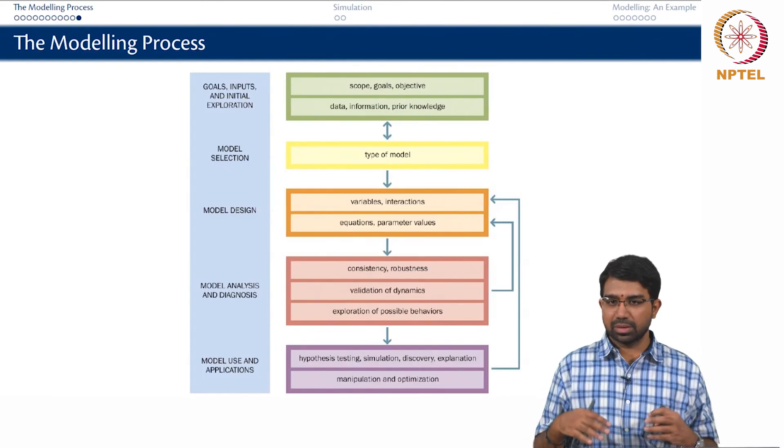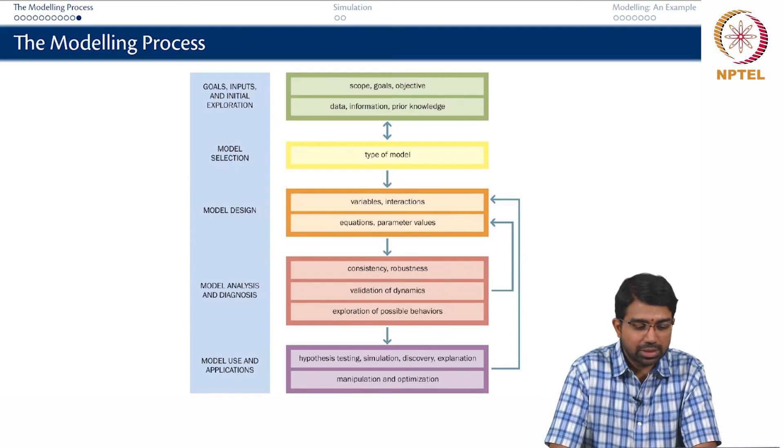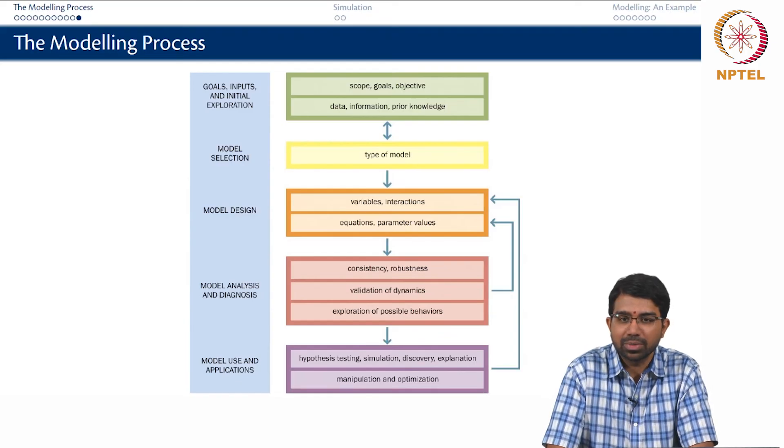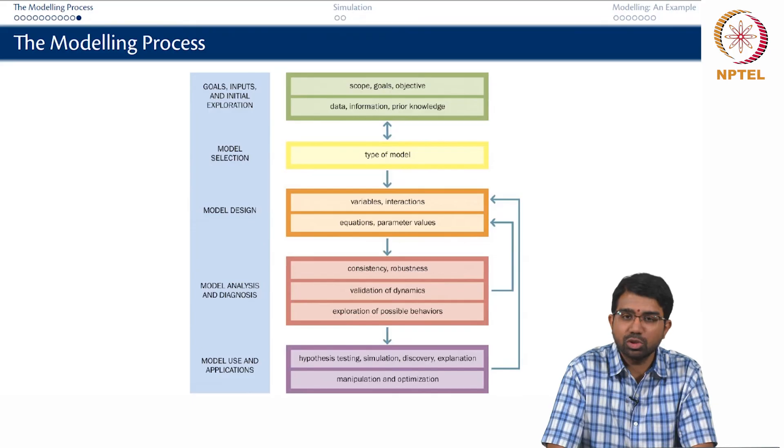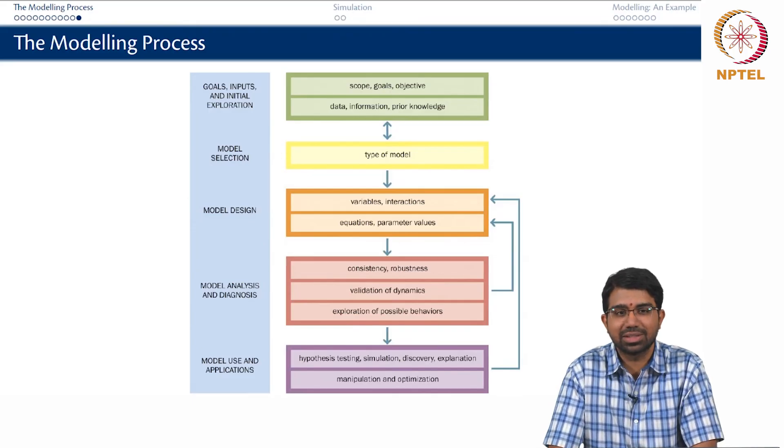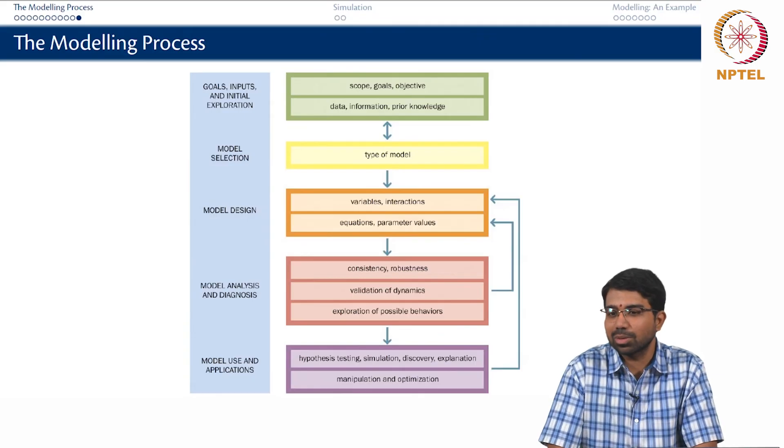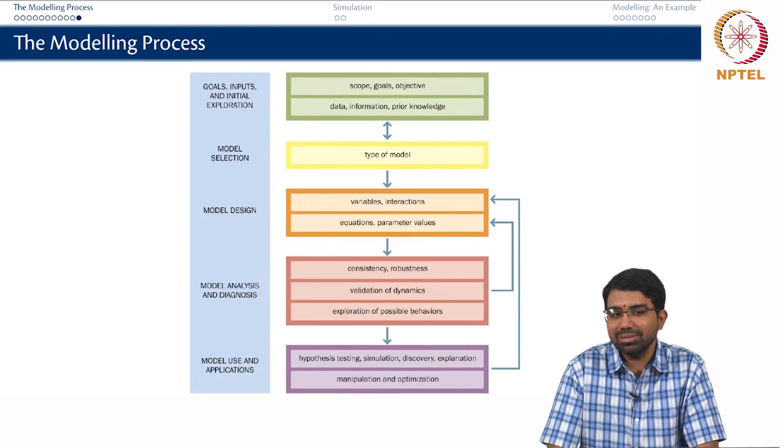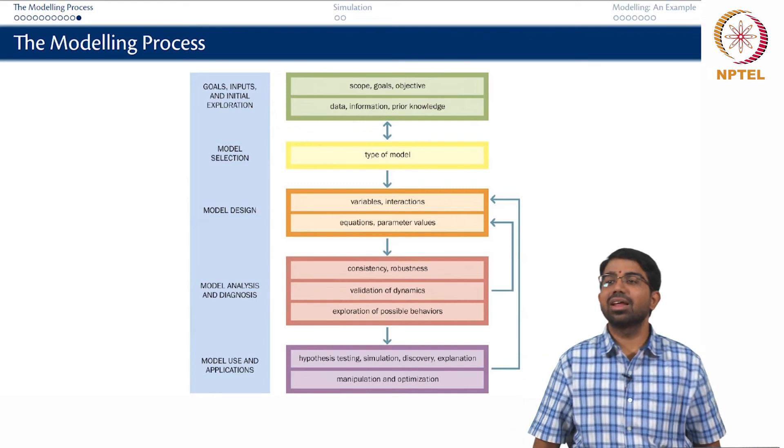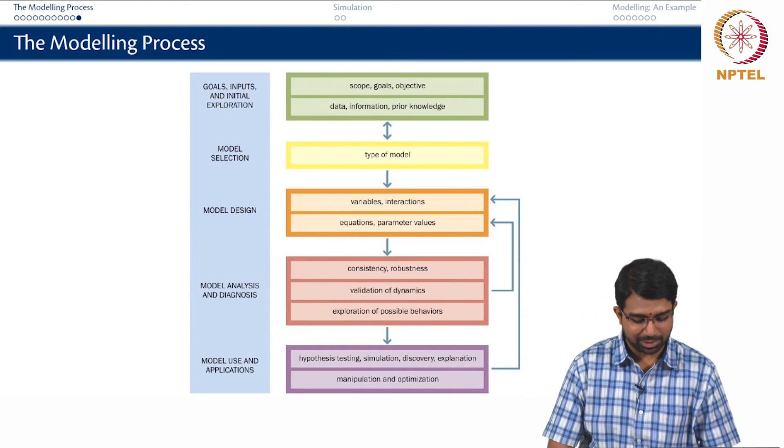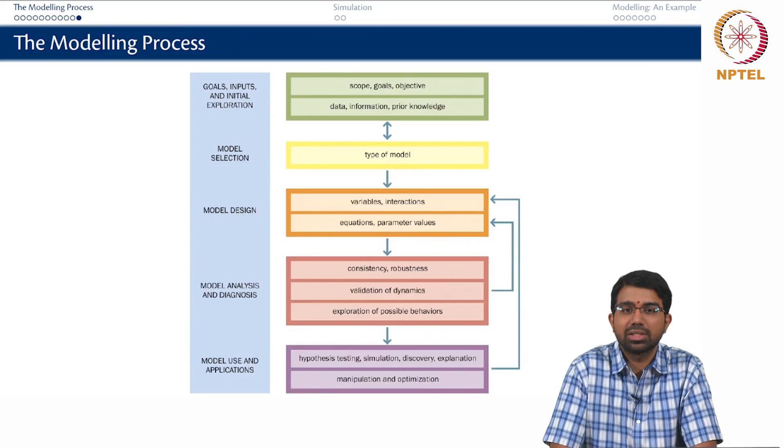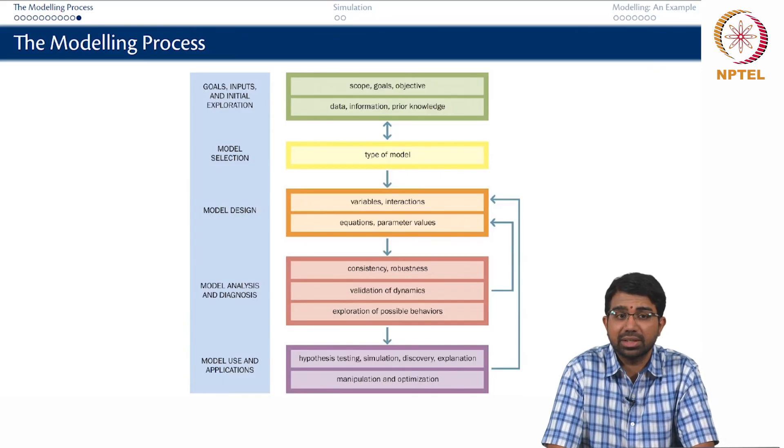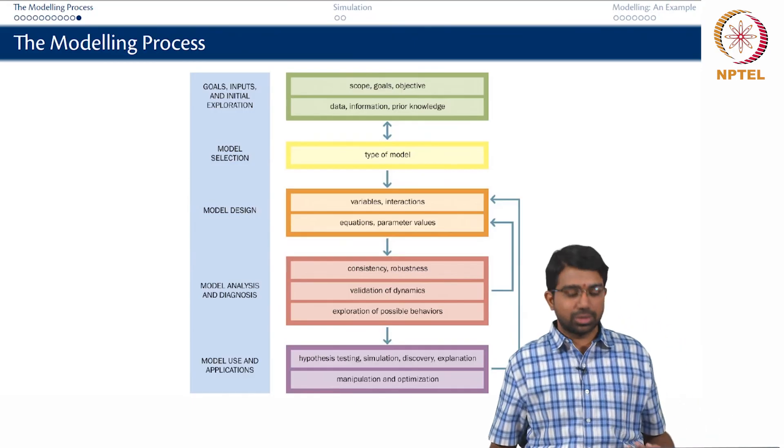So this is a kind of overview of what we discussed so far. So you need to first look at what are the goals of the modeling exercise? What are your available inputs and do some initial exploration. And then choose a model. This is where the distinction between the science and the art are blurred. So is modeling a science or modeling an art? It is an open question. It is a science in some sense but then there is a lot of subjectivity to it which becomes an art in some sense. So what are the aspects of model design you need to worry about. There are certain variables, what are their interactions, what are the equations that connect these variables and represent the interactions, what are the parameter values and so on.